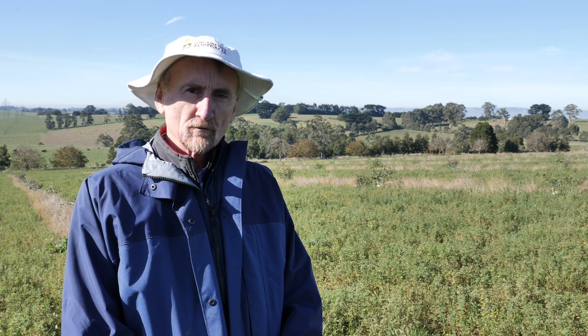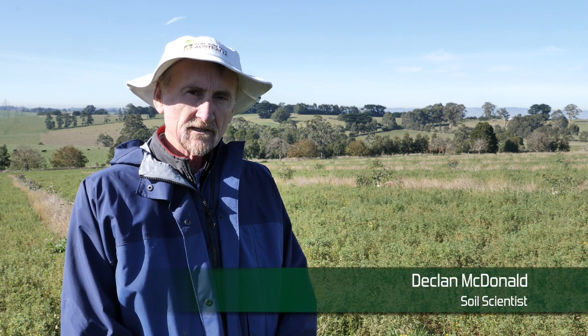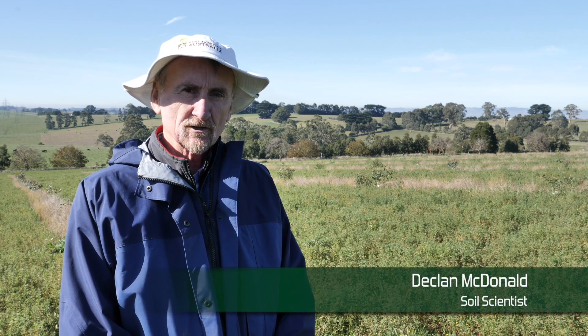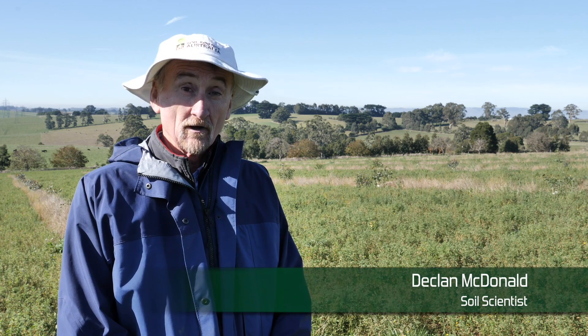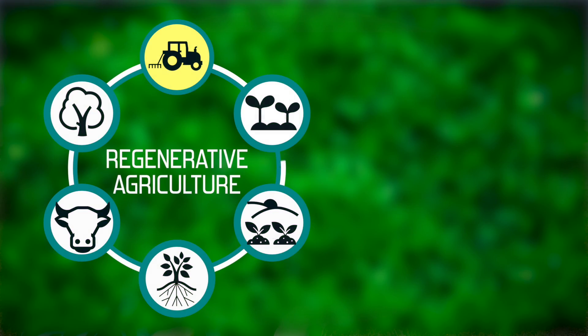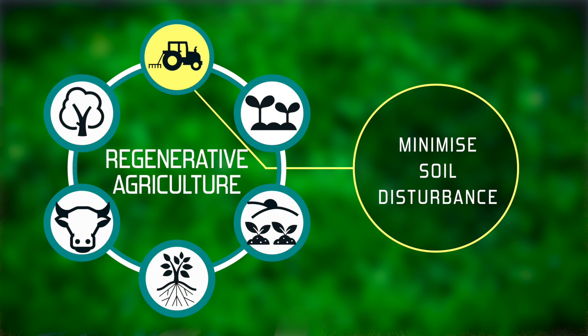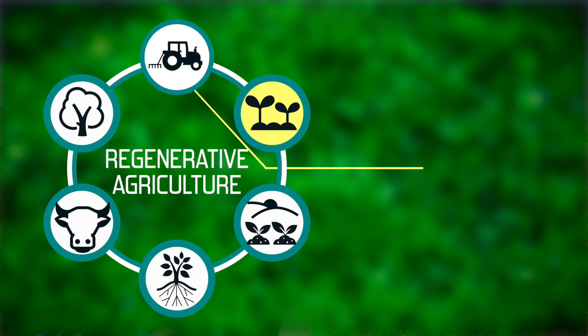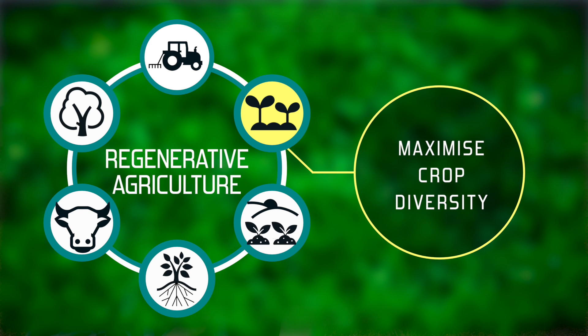We're talking about regenerative agriculture, and this is an introduction to a short series of regenerative agriculture videos looking at some of the key principles. The first principle is minimise disturbance. The second principle is maximise diversity in the pasture, in the sward, or in the crop.